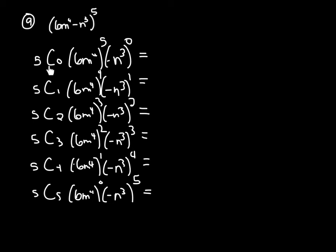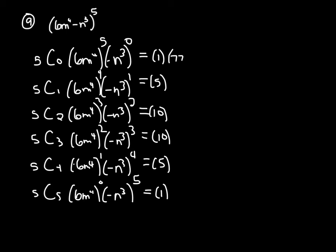I like to do all my combinations first: 5C0 is 1, 5C1 is 5, 5C2 is 10, 5C3 is 10, 5C4 is 5, and 5C5 is 1. Now I'll do all my first parentheses. We take 6 raised to the 5th power — which is 7,776 — and m to the 4th raised to the 5th. When you have a power to a power, you multiply: 4 times 5 is 20, so it'll be m to the 20th.